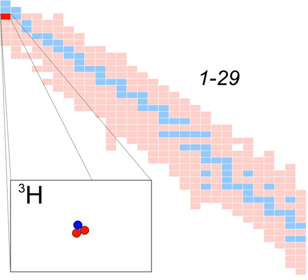Ontario Power Generation's Tritium Removal Facility processes up to 2,500 tons of heavy water a year, and it separates out about 2.5 kilograms of tritium, making it available for other uses. Deuterium's absorption cross-section for thermal neutrons is about 0.52 milli-barns, whereas that of oxygen-16 is about 0.19 milli-barns and that of oxygen-17 is about 240 milli-barns.